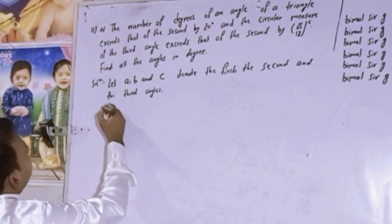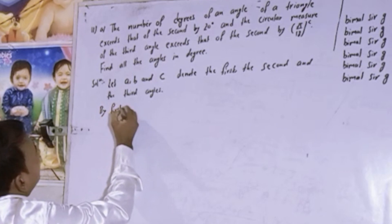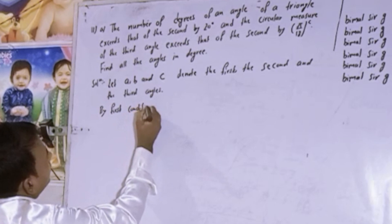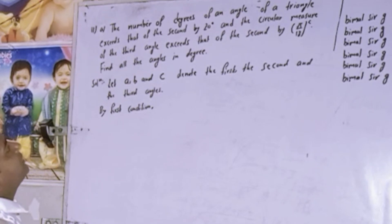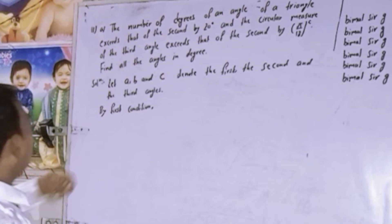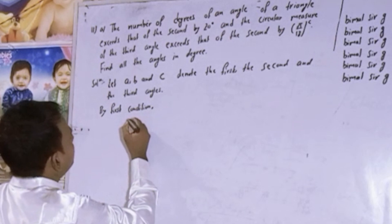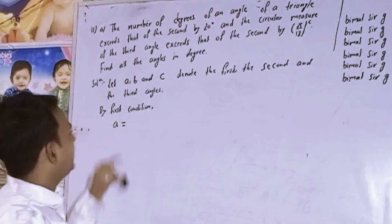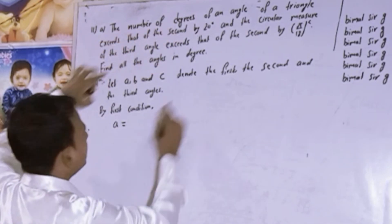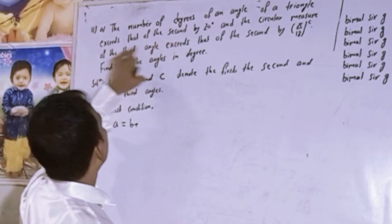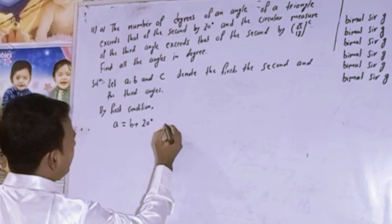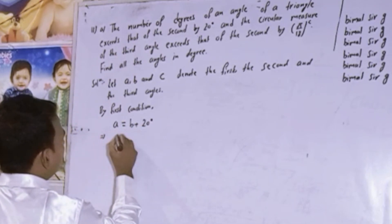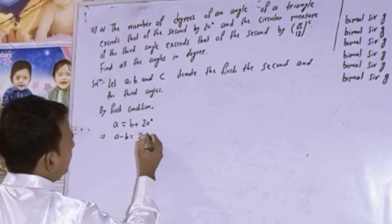Now from the first condition: the number of degrees of an angle of a triangle exceeds that of the second by 20 degrees. So if A is the first angle and B is the second angle, then A exceeds B by 20 degrees. We can write: A minus B is equal to 20 degrees. This is equation 1.